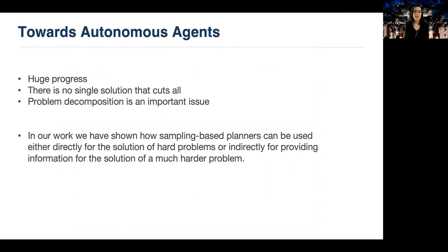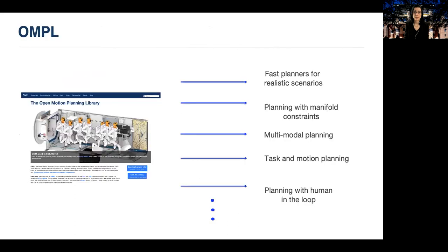So let me summarize and offer some thoughts. We have made huge progress towards the design of autonomous agents. There is no single solution that cuts all. And in my opinion, problem decomposition is a very important issue. In this talk, I showed you how sampling-based planners are used in our work for the design of autonomous agents. OMPL has been an enabler for us. And despite the problems and the agony over the years to keep it going, the effort has been more than worthwhile.